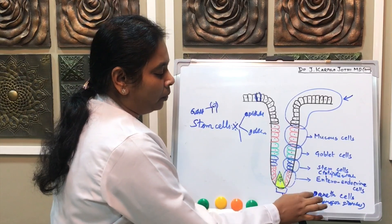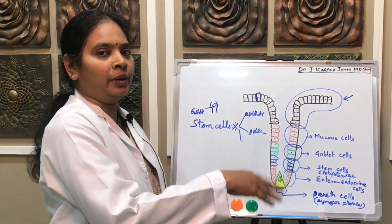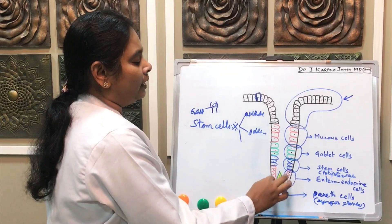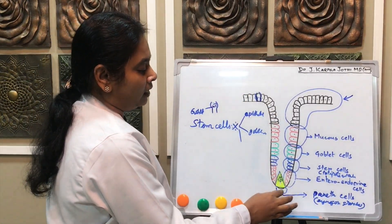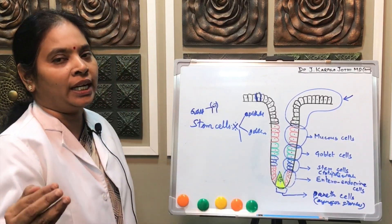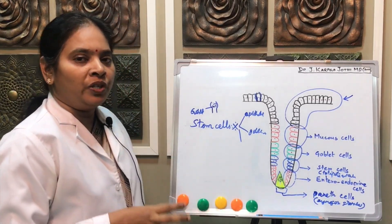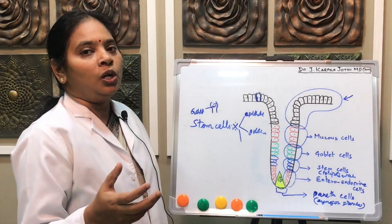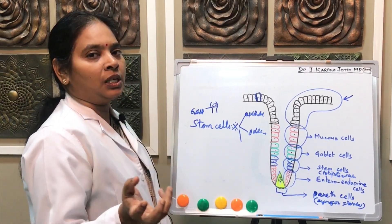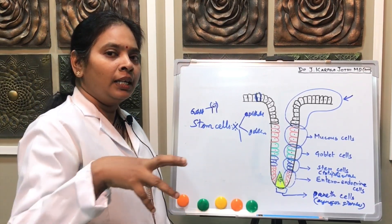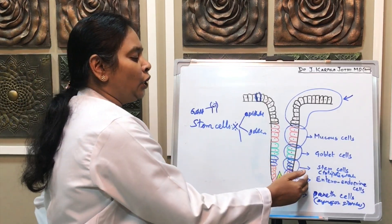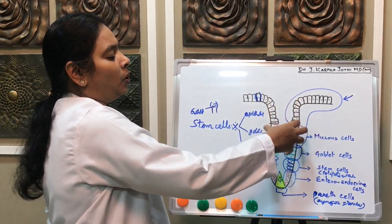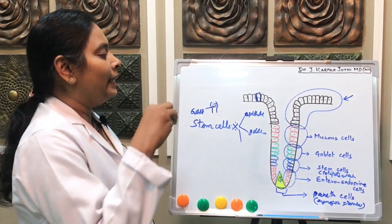Paneth cells are an important MCQ point - where are they present? They are present in the crypts of Lieberkühn, which are the intestinal glands, at the base of the intestinal glands. Along with paneth cells, there are other cells called enteroendocrine cells. We have already seen these cells in the stomach, where they secrete gastrin, somatostatin, and histamine. Here in the intestine, they secrete cholecystokinin, substance P, and vasoactive intestinal polypeptide. These are some of the hormones secreted by enteroendocrine cells present at the base of the intestinal glands.